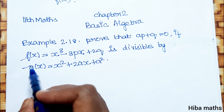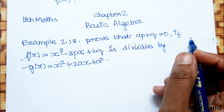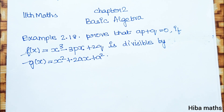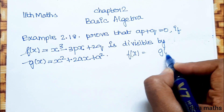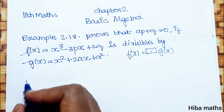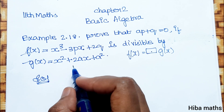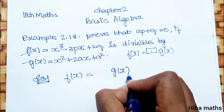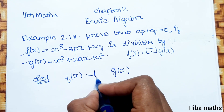Since f of x is divisible by g of x, we can write f of x divided by g of x. We want to prove this by finding the quotient.